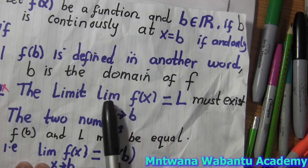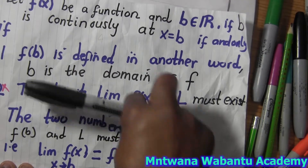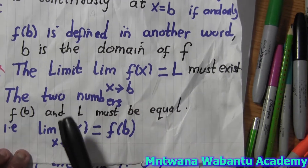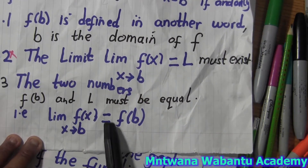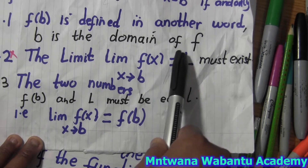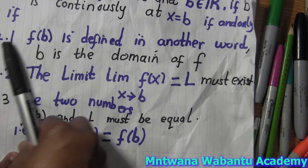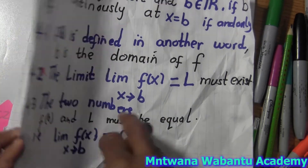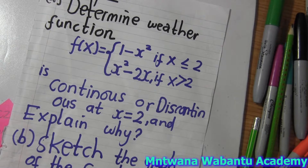If it does exist, then we check: left-hand side limit must equal right-hand side limit. This is a condition for a continuous function. And the last condition is f(x) must equal the limit value at that point. So if those hold, the function is continuous. For now, we have to solve it and see if it does exist, and then we can conclude.